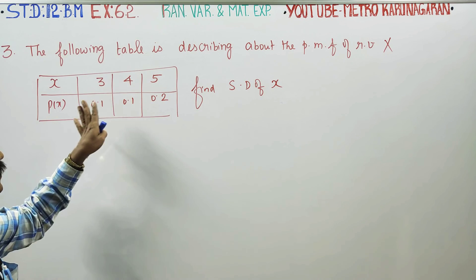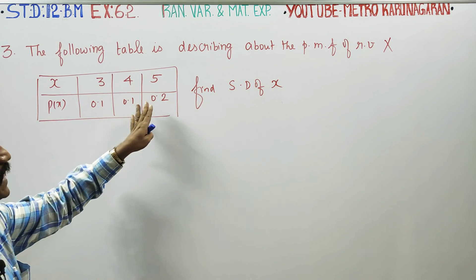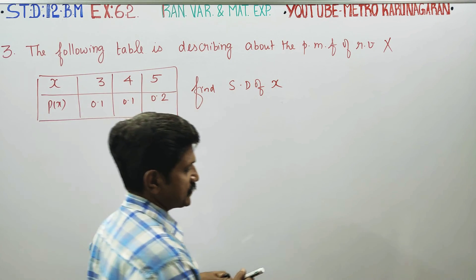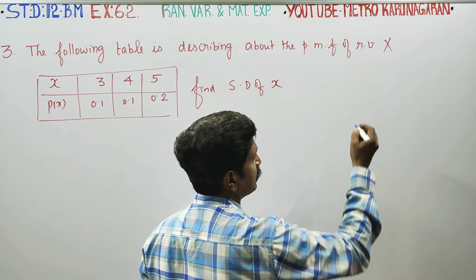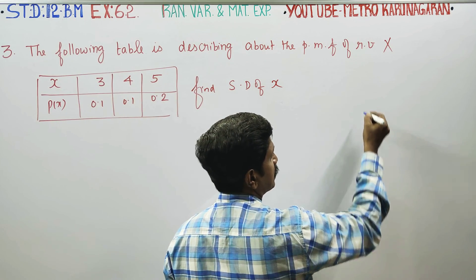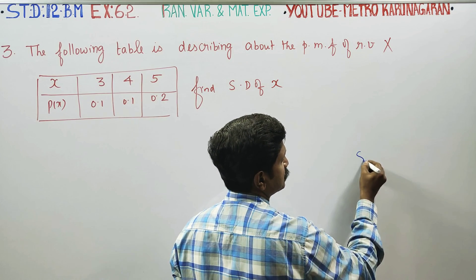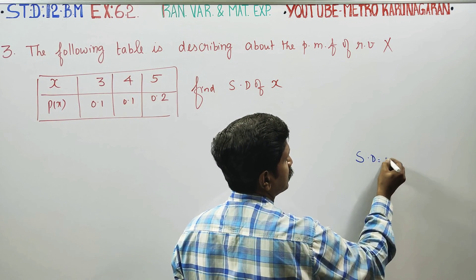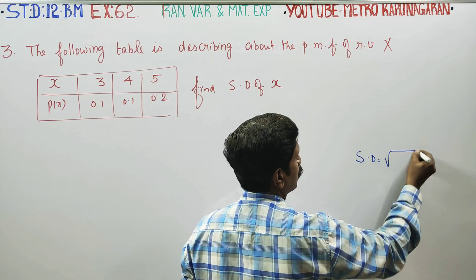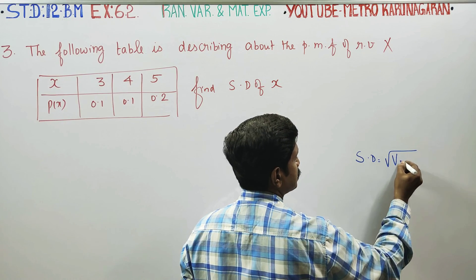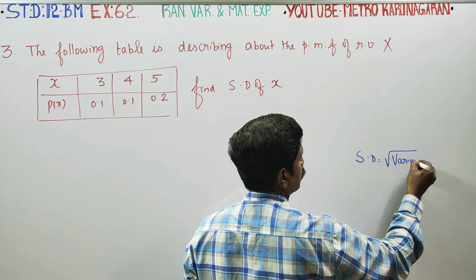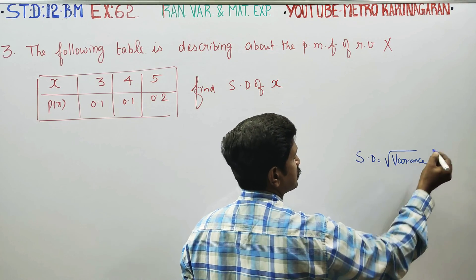We are given the probability mass function. Standard deviation — that is the formula: square root of variance. Standard deviation equals square root of variance.